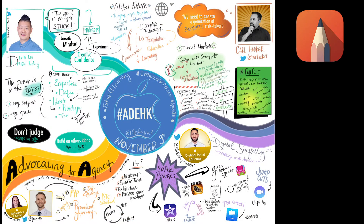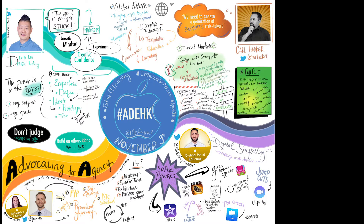This sketchnote was made using the Autodesk Sketchbook app, but could easily be made in Procreate or Keynote as well. Notice how I used colored wavy lines to help separate the page into different sections. The use of icons and images along with text makes this more visually appealing for the audience.